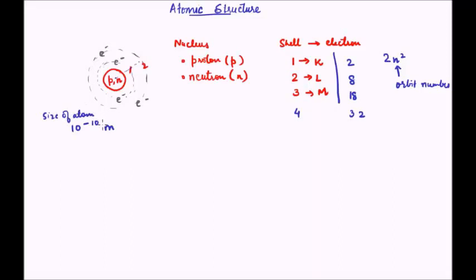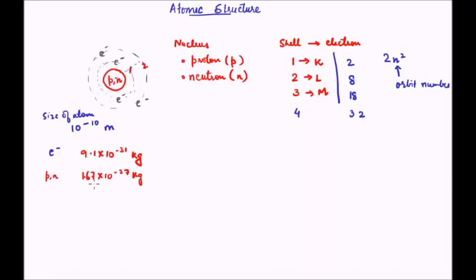The next thing you need to know is that electrons are much lighter than protons or neutrons. The mass of an electron is around 9.1×10⁻³¹ kg, whereas the mass of a proton and a neutron are approximately 1.67×10⁻²⁷ kg — they both vary slightly but roughly they are this much. So protons and neutrons are about 10⁴ orders of magnitude heavier than the electron.